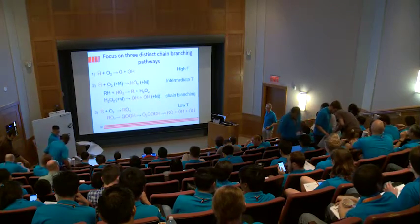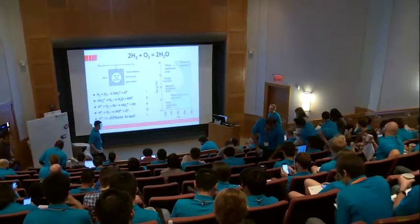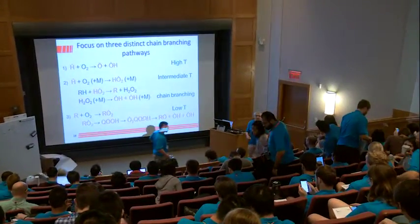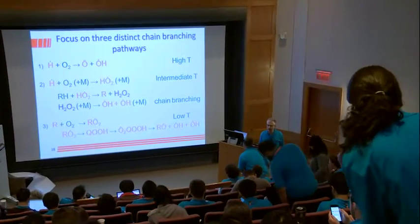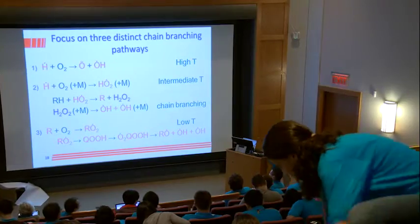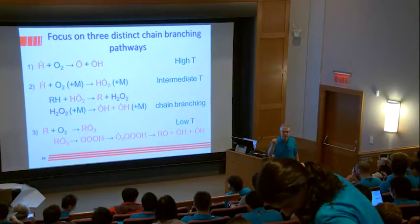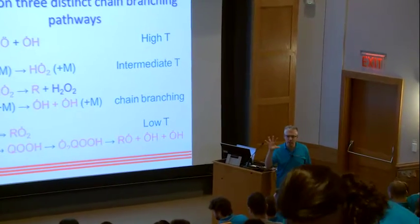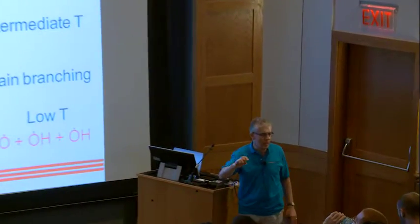We just finished talking about low, intermediate, and high temperature. Somebody was asking about the sensitivity analysis, and one person showed me an integrated sensitivity analysis. What I was showing was actually just a point in time in the simulation. When I showed the sensitivity analysis for methyl butanoate, I don't know precisely what the fuel conversion was, but I normally perform sensitivity analysis between 10 and 20 percent fuel consumed. If we're comparing two fuels, we try to compare at the same fuel conversion to see what's controlling the fuel oxidation at that point.